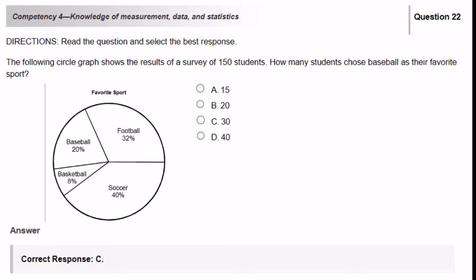In this case, 20% of the students chose baseball. So you would multiply 150 times 20%. You would need to change your percent to a decimal, 0.20, and then proceed with your multiplication.